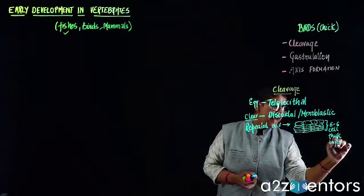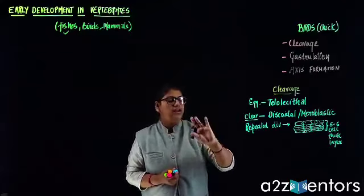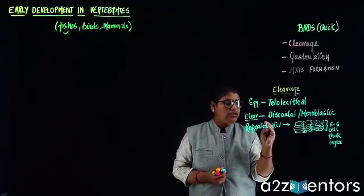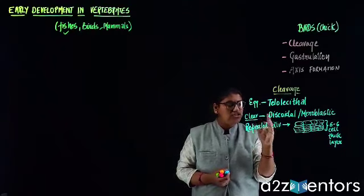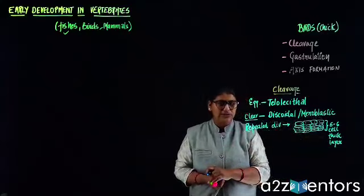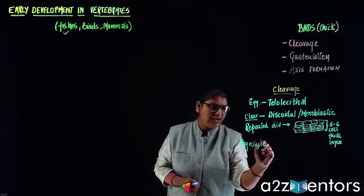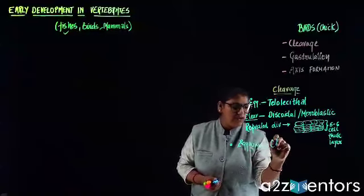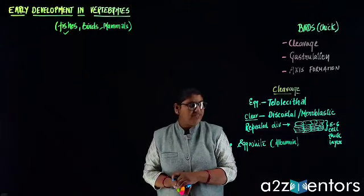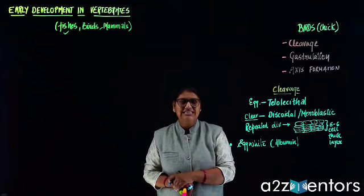This five to six cell thick layer distributes according to the secretion of certain substances. When I talk about these layers, you have something called egg white, which is called albumin. This albumin has a specific chemical, and that chemical gets secreted, and because of that secretion of the chemical, you have a cavity called the sub-germinal cavity.